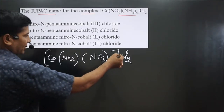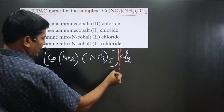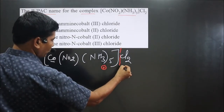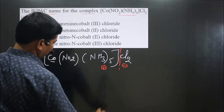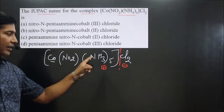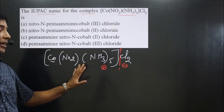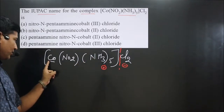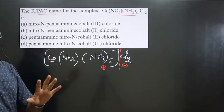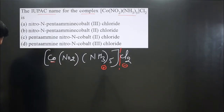If we break this complex, the counter ion separates out. The first part is always the cationic part, followed by the negative part. You can see the central metal atom is present in the cationic complex, which means we have to use the common name of cobalt as given in the periodic table.